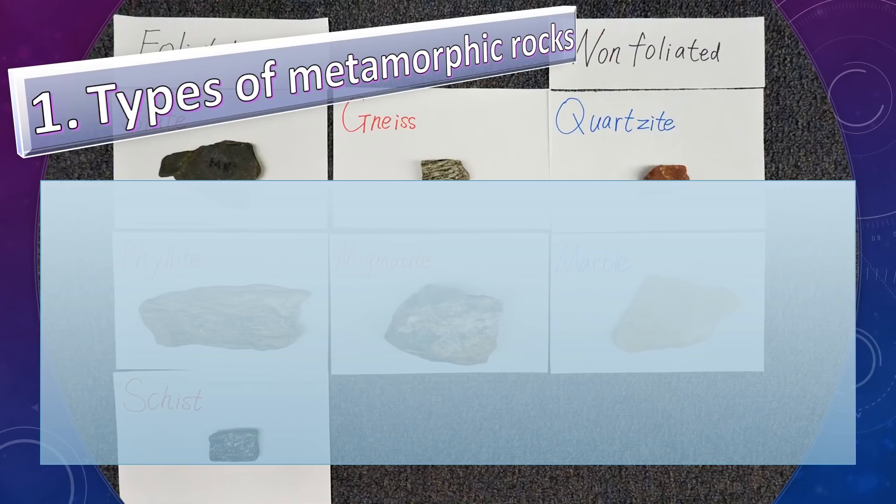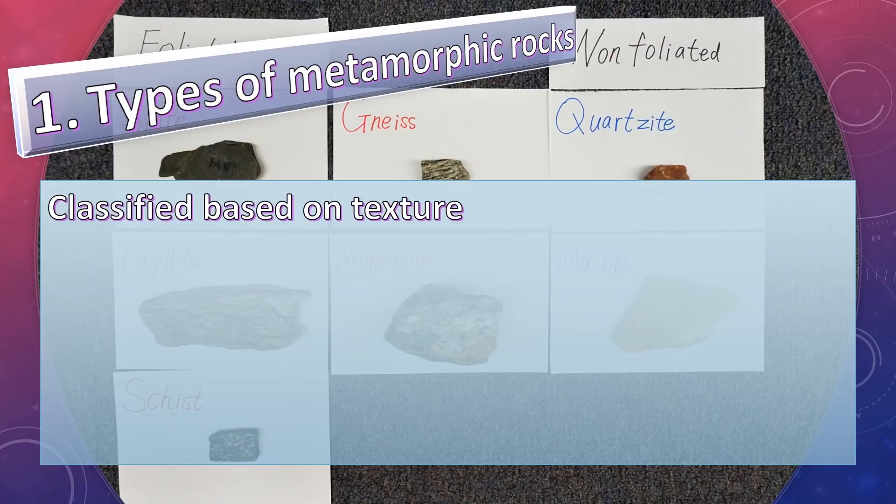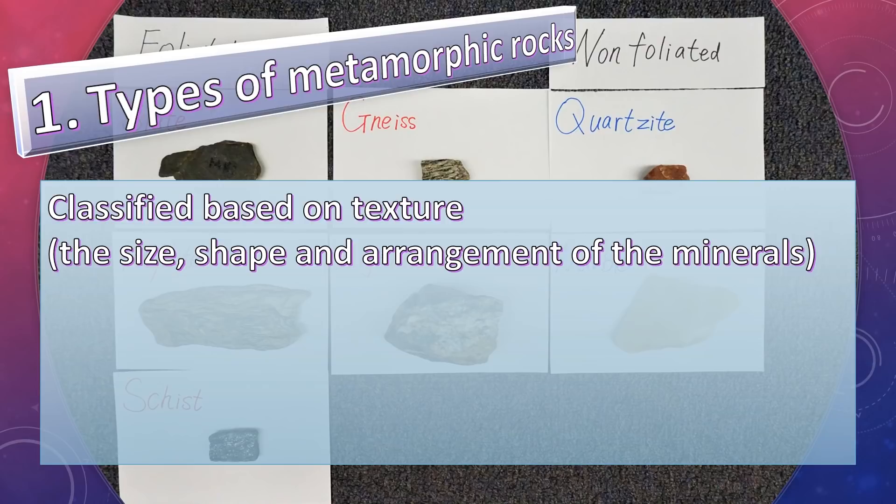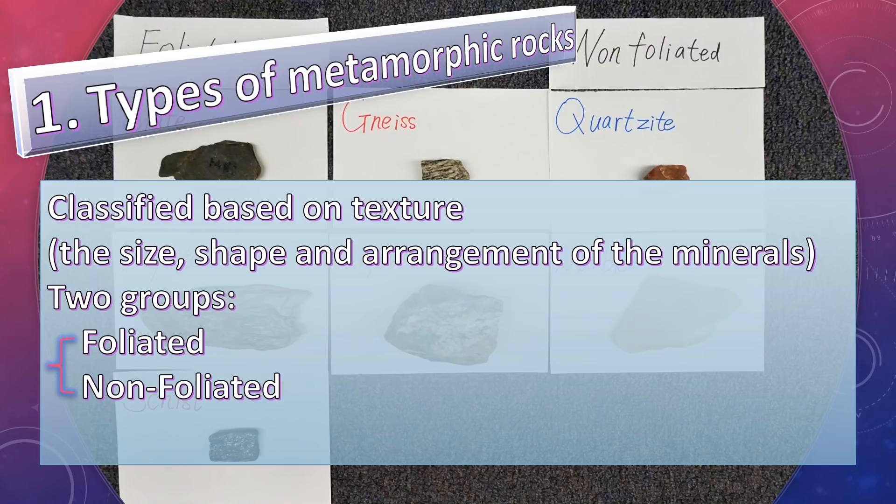First, types of metamorphic rocks classified based on texture, which is the size, shape, and arrangement of the minerals. There are two groups: foliated and non-foliated.